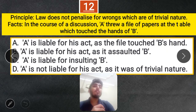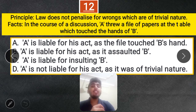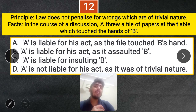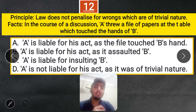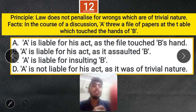Question 12: There is a principle that the law does not penalize for wrongs of a trivial nature. In the course of a discussion, A threw some papers on the table which touched B's hands. Is A liable? Options: liable as it assaulted B, liable as it insulted B, or not liable as the act was of trivial nature. The correct answer is D — A is not liable, as the act was of trivial nature per the De minimis principle.